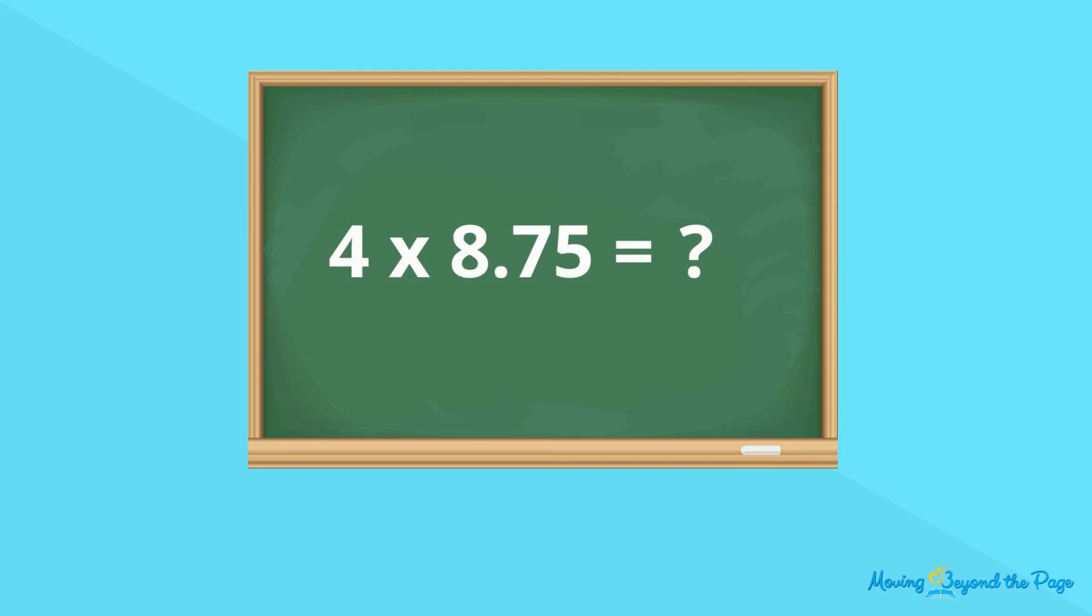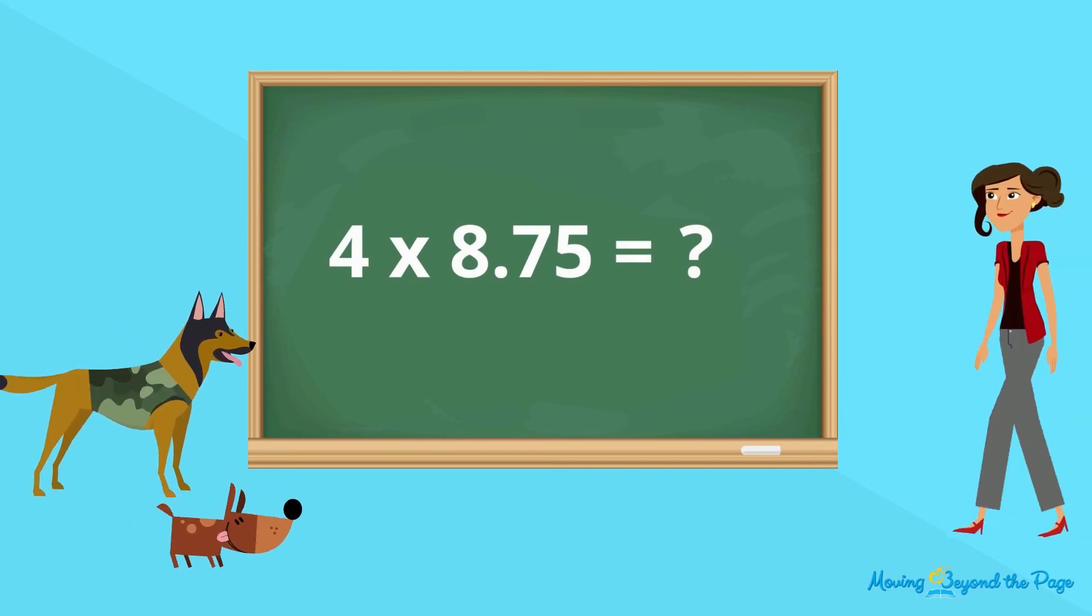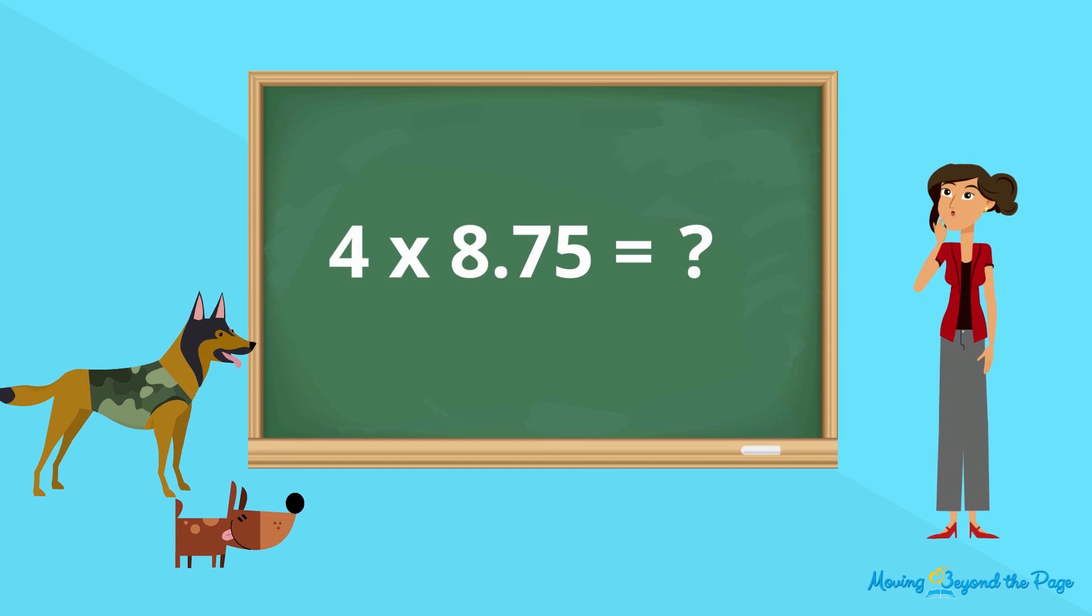What's the product of 4 and 8 and 75 one-hundredths? You should find it's 35.